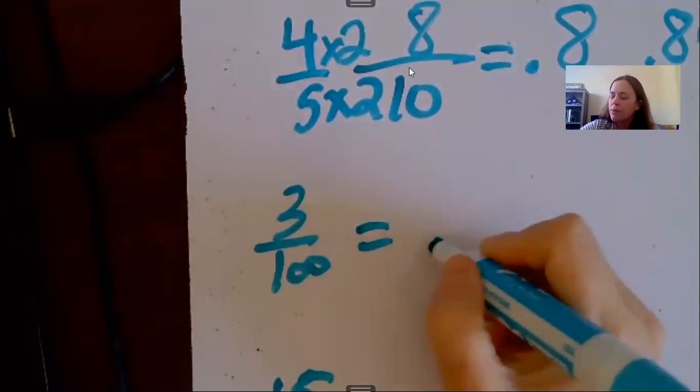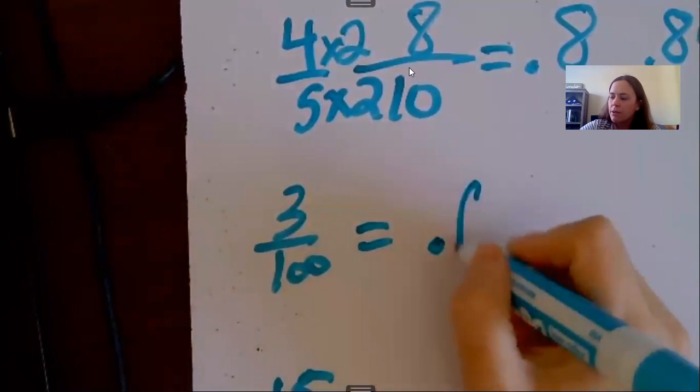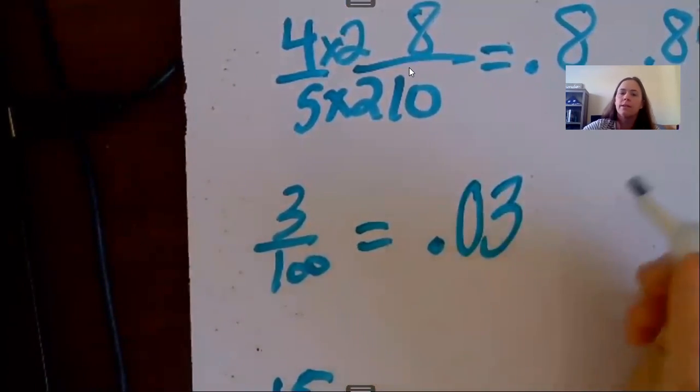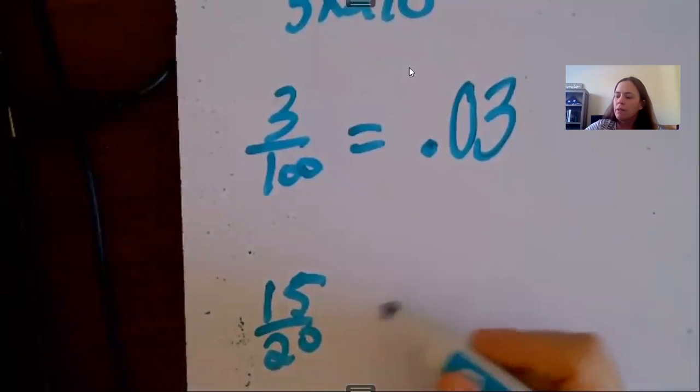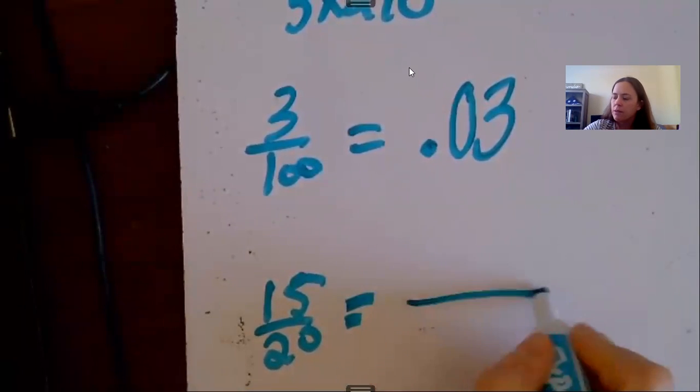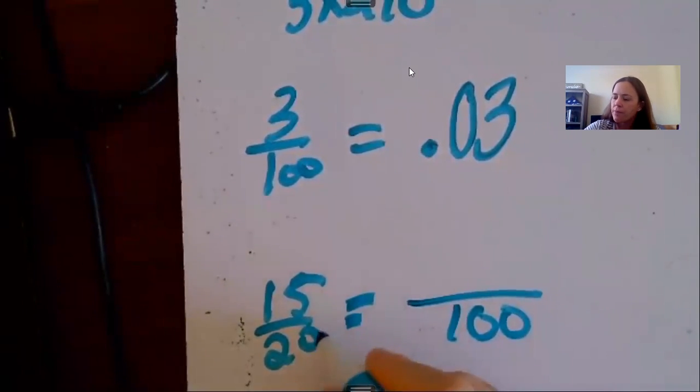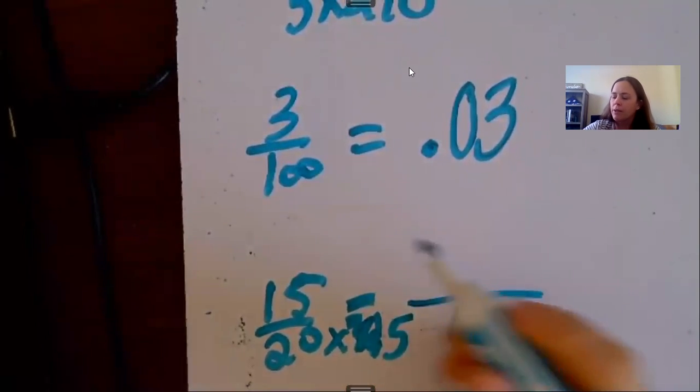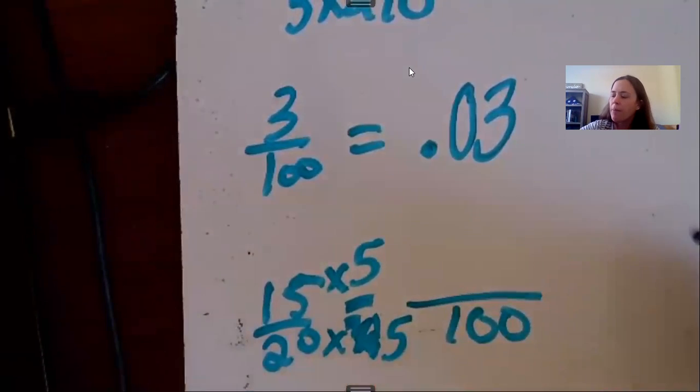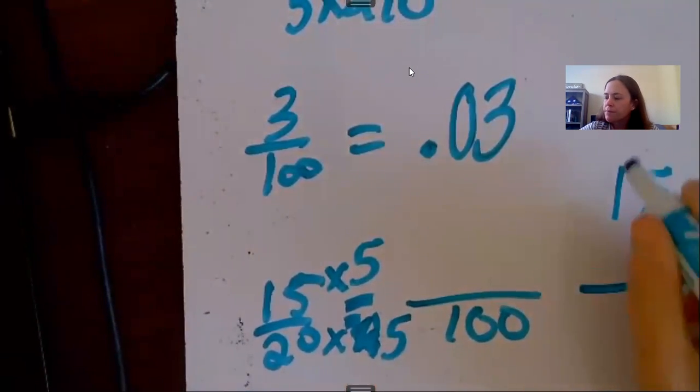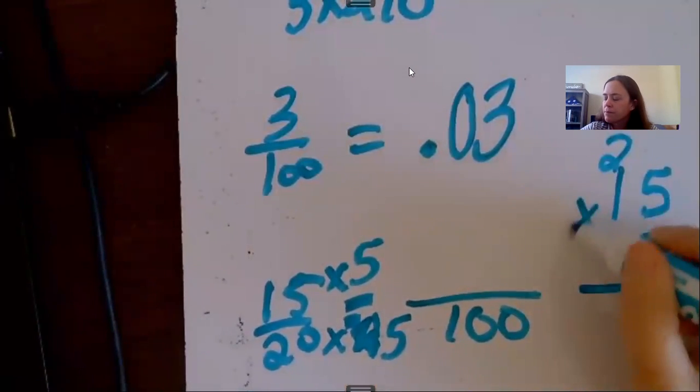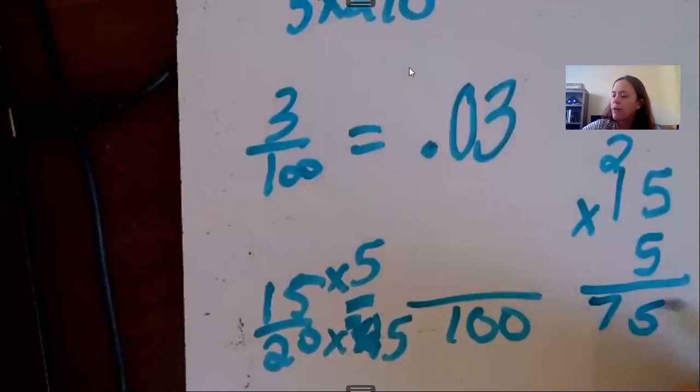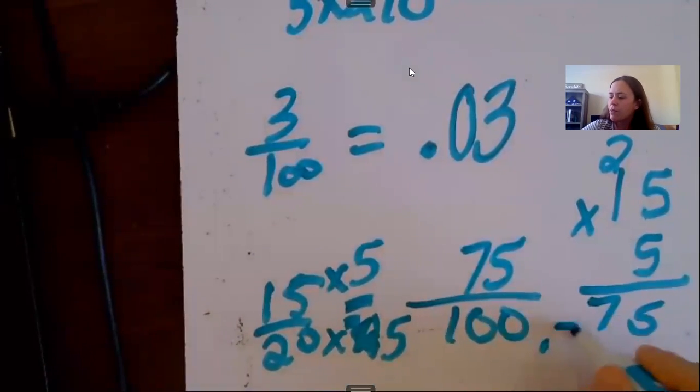3 one hundredths. Now this can be confusing to people, there's no tenths, this is 100, so we put a zero there, there's no tenths, there's only three hundredths, so it's like having three pennies. And same thing, there's that 20 again, so we want to make that 100. There's a couple ways, you could put it in simplest form first, but if you want to do it this way you can. So 20 times 5 is 100, 15 times 5 is 75. So that is 0.75.